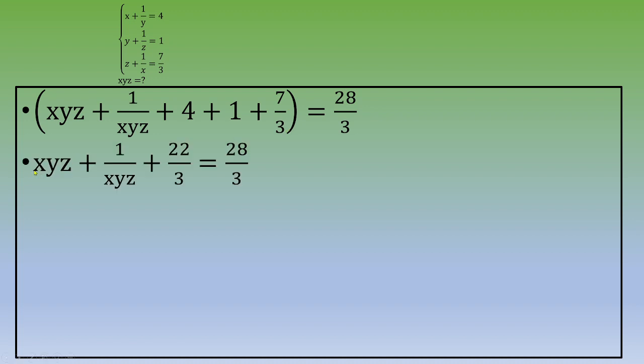Simplifying, xyz plus 1 over xyz plus 22 over 3 equals 28 over 3. Therefore, xyz plus 1 over xyz equals 2.